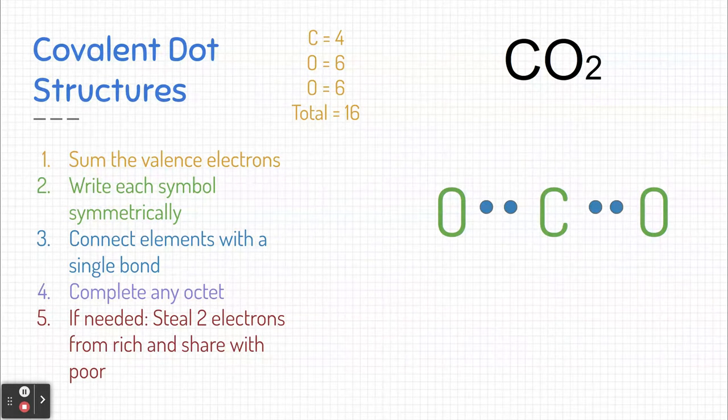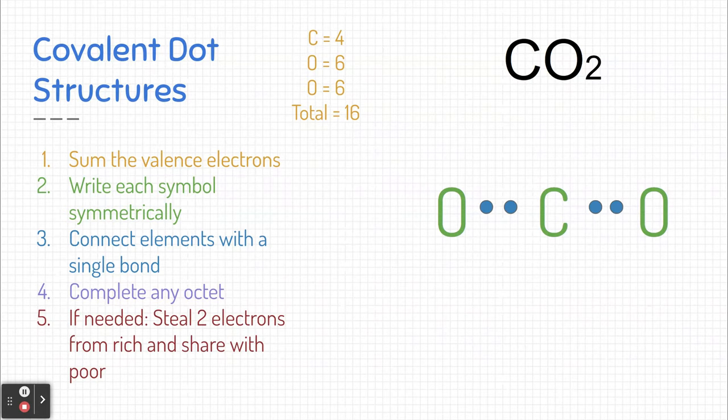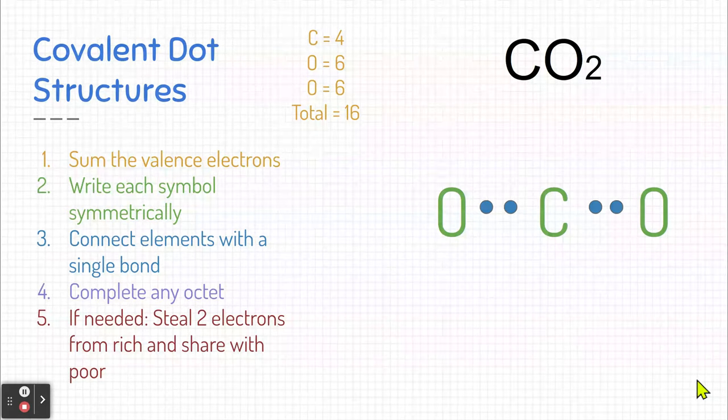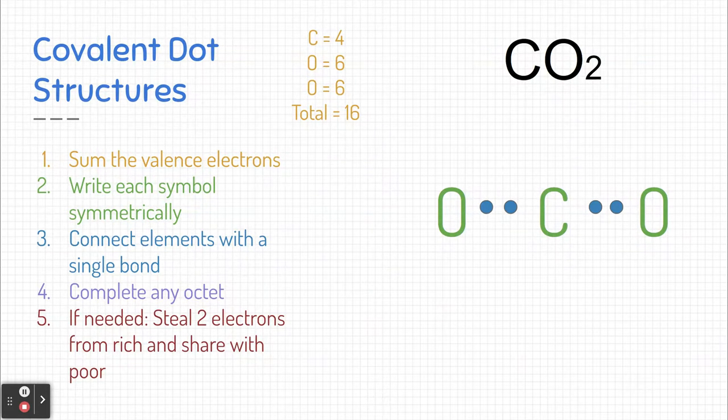Remember, a single bond requires two electrons, one shared from one element and the other one shared from the other element. So here's a single bond. Now, because we had to use two electrons per bond, we're going to need to subtract that from our total. So I'm subtracting four from the 16 that we started with. Now we only have 12 electrons left that still need to go on this compound.